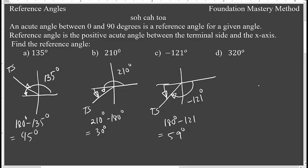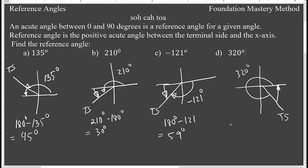Let us draw the angle — 320 degrees will come somewhere here in the fourth quadrant. This is the terminal side at 320 degrees, going from 180 a little more to 320. The reference angle is in the positive direction from terminal side to x-axis, and this is 360 minus 320, which is 40 degrees. So we are done with reference angles in degree measures.